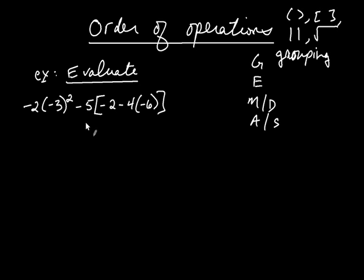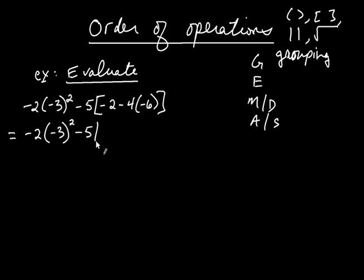The key to these problems is not jumping ahead and writing the answer. Even though you're focusing on this, you still write everything down left to right until you get to what you're interested in. It's going to be negative 2, bracket, parentheses, negative 3 squared, minus 5. You can take the subtraction symbol and mentally attach it to the 4 — think of negative 4 multiplied by negative 6, which is positive 24.